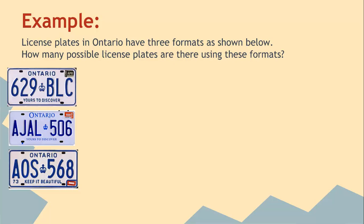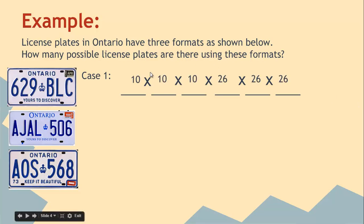If we look at this, we've got the license plates in Ontario with three formats as shown below. How many possible license plates are there? We actually have three different cases. The first case will have a six digit license plate, and there are 10 ways to do the numbers and 26 ways to do the letters. So the slot method says 10 times 10 times 10 and so on.